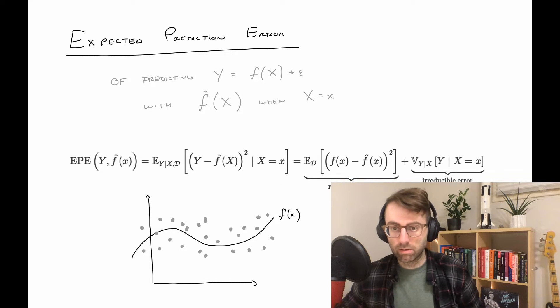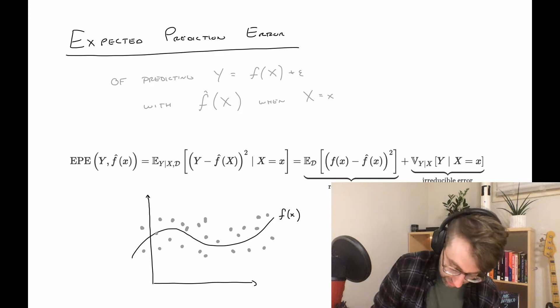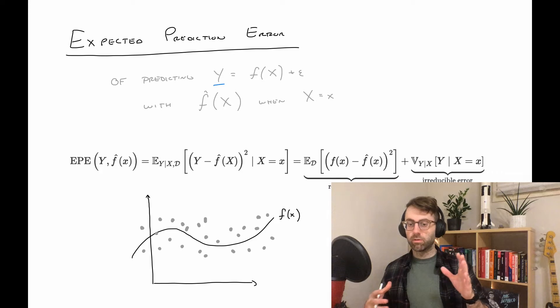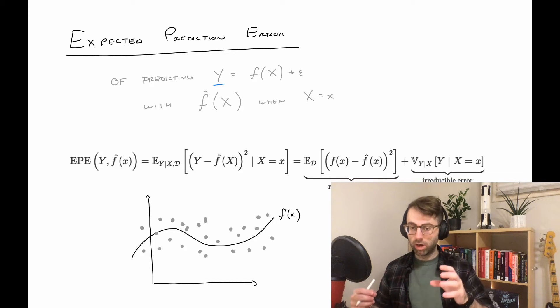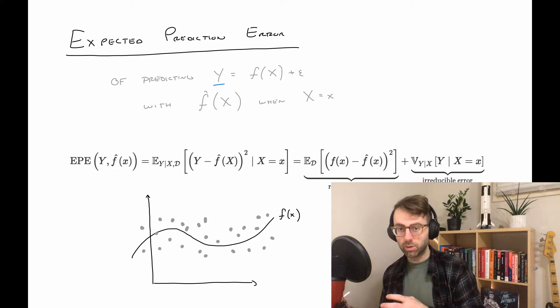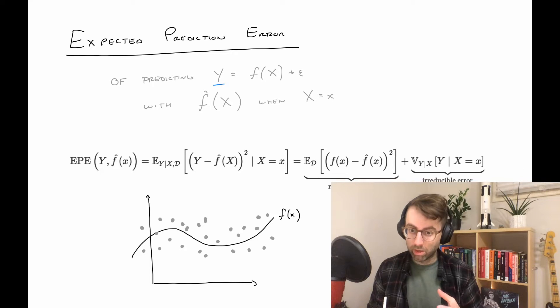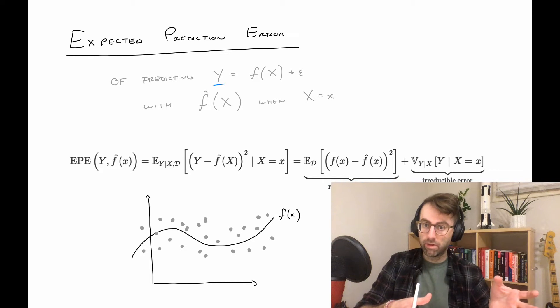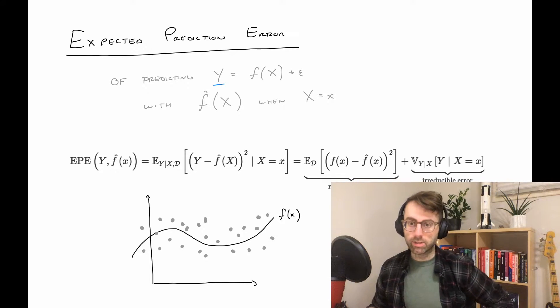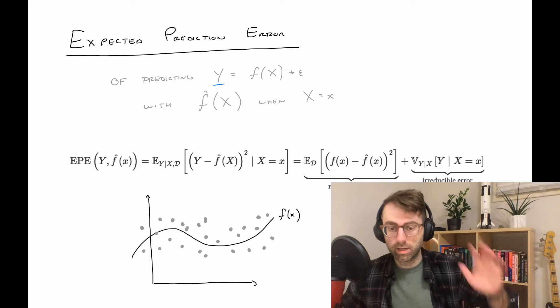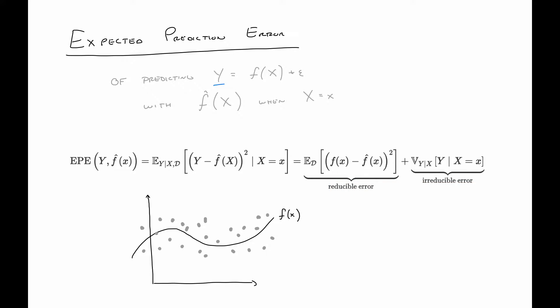I want to talk about the idea of expected prediction error. What we're trying to predict is y, which we believe is roughly of the form f(x) plus epsilon, where f(x) is the signal and epsilon is the noise. We want to estimate that with f-hat of x at a particular x. The expected prediction error decomposes into two things: reducible error and irreducible error.